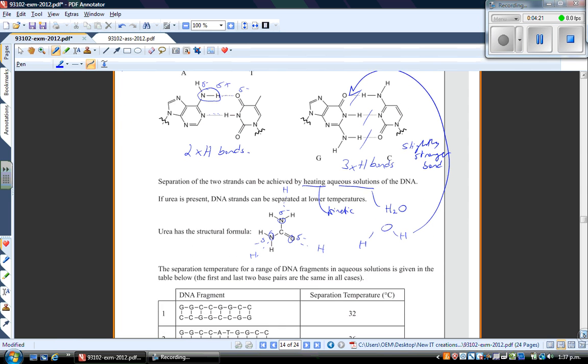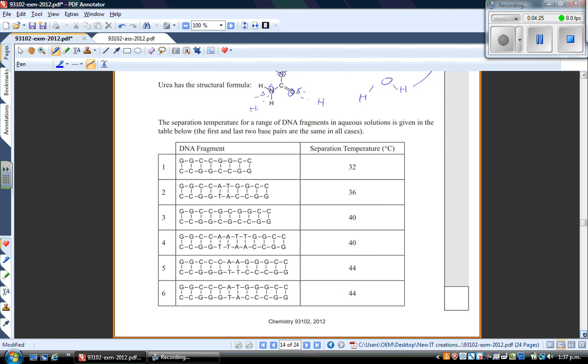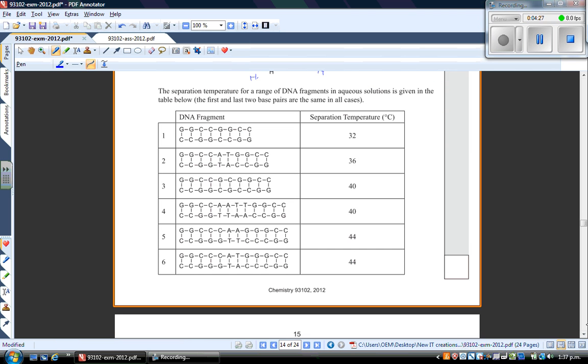If we scroll on down, then let's see what the question actually is. So the question states, the separation temperature for a range of DNA fragments in aqueous solutions is given in the table below. The first and last two base pairs are the same in all cases. So the first base pair is always G and C. So you can see it there, G, C, G, C, G, C. And then the last two are all the same. They're all C, G, C, G. So they're all the same right there. And then you have some separation temperatures here.